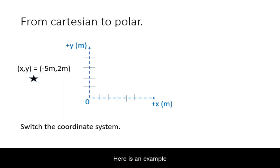Here is an example of converting from Cartesian to polar coordinates. We start with a position vector of negative 5 meters in the x-direction and positive 2 meters in the y-direction.